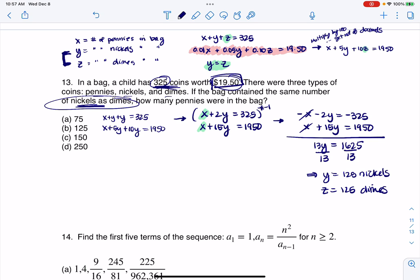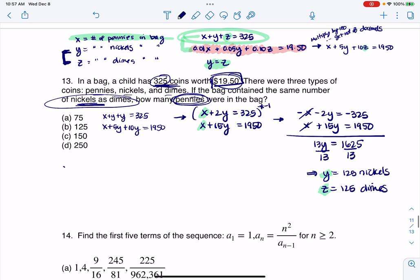All right, now let's see what they were asking for. It actually said how many pennies were in the bag. So ultimately, I want the value of X here. So let's go plug back in our Y value of 125 and our Z value of 125 into either of these two initial equations. I'm personally just going to pick this one because it looks simplest to me. So I've got X plus Y plus Z has to equal 325. So that would be X plus 125 plus 125 equals 325. And when I solve for X here, that's going to give me 75 pennies.